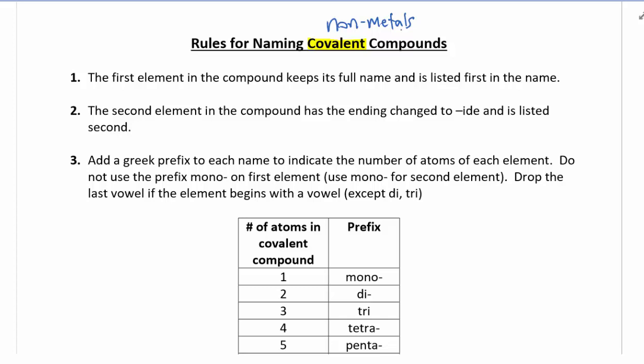The first element in the compound keeps its full name and is listed first in the name. The second element of the compound has the ending changed to IDE and is listed second. That's a common thing we're going to see on a lot of these naming rules.